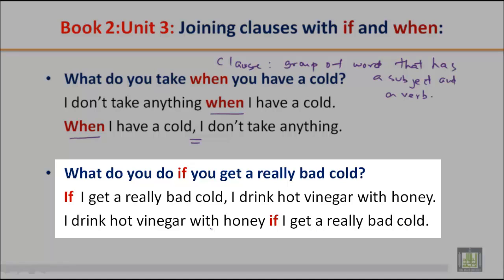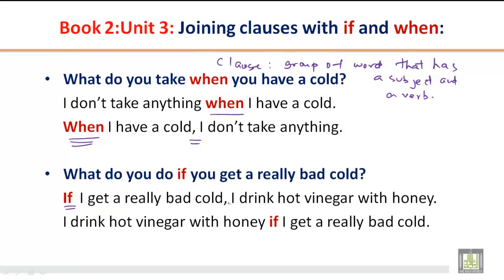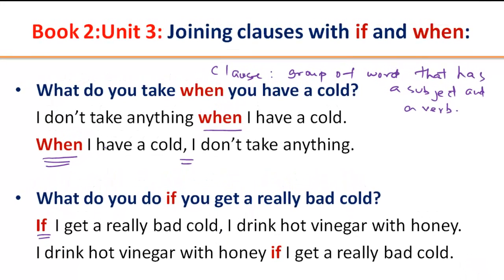Just remember: when 'if' and 'when' come at the beginning, we have a comma after the clause because it's a dependent clause — it cannot exist on its own. We can write in two different forms: What do you take when you have a cold? / When I have a cold, I don't take anything. Similarly: If I get a really bad cold, I drink hot vinegar with honey. Notice the comma placement.